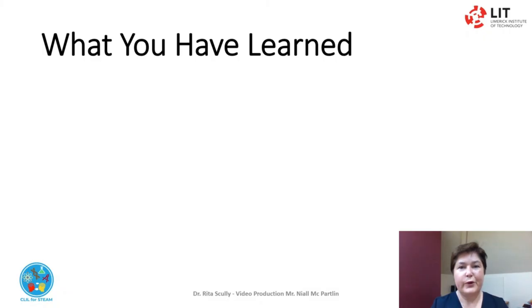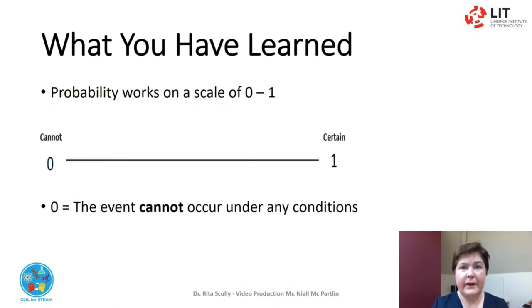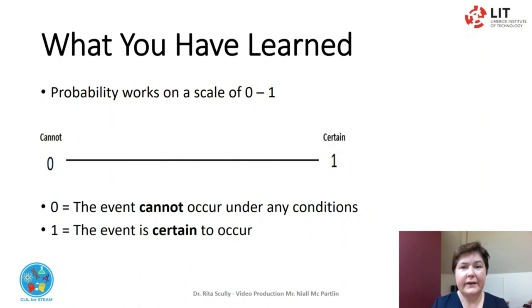What you have learned. Probability is the study of how likely something is to happen. Probability works on a scale of 0 to 1. At 0, the event cannot occur under any circumstances. At 1, the event is certain to occur. Probability can be shown on the probability line of 0 to 1.